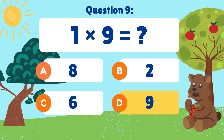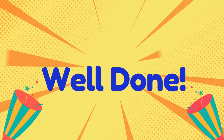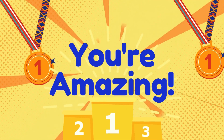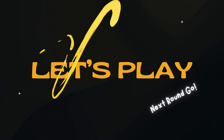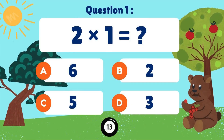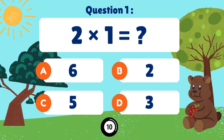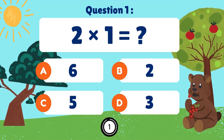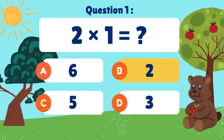1 times 9 is equal to. Two times one equals two.